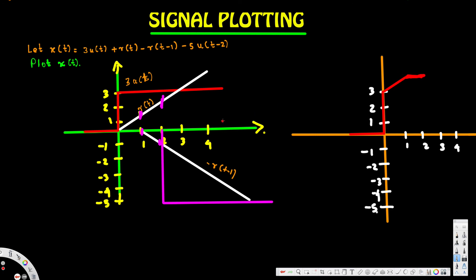After t = 2, the -5u(t-2) term kicks in, dropping the signal by 5 units. Since the flat line was at 4 at that point, dropping 5 units brings the signal down to -1. After that, the graph continues horizontally at -1.